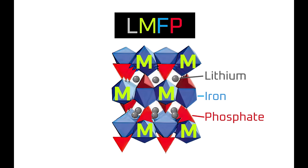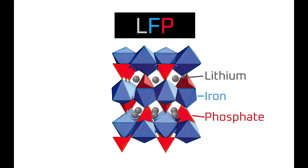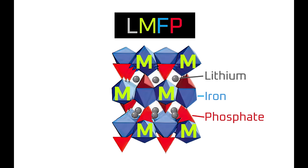But I also briefly mentioned in that video that CATL's M3P battery chemistry appears to be an LMFP type chemistry — that is, an LFP chemistry doped with manganese to increase its energy density. The question is: if it was just a matter of adding manganese to increase the energy density of LFP, why wasn't that done earlier?